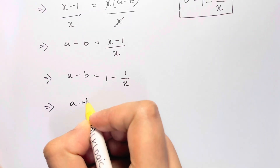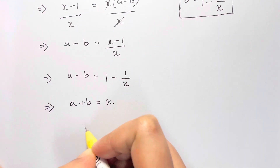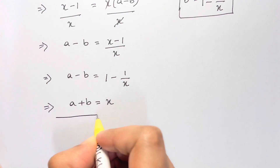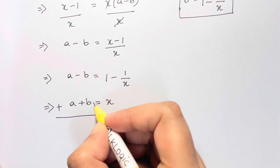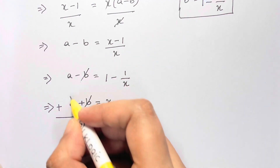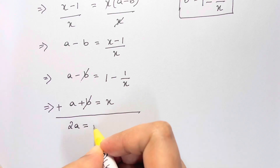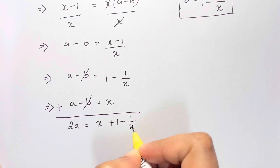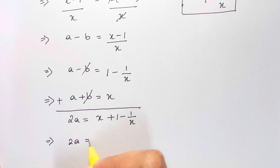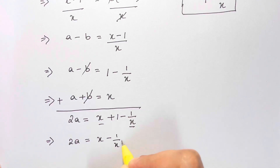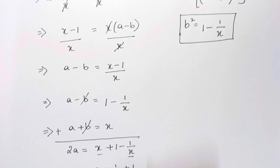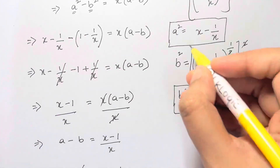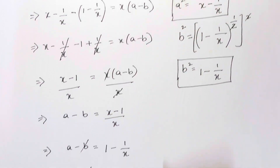We now have two equations. Let's add them together. The b terms cancel out, so we have 2a equals x plus 1 minus 1 over x, which is 2a equals (x minus 1 over x) plus 1. And we know that x minus 1 over x equals a squared.